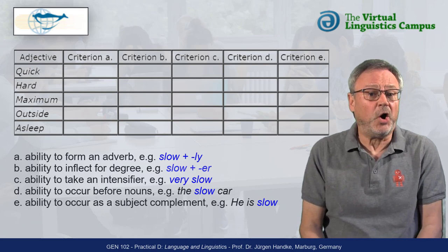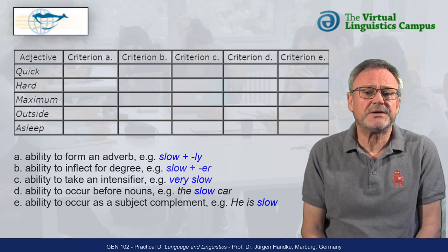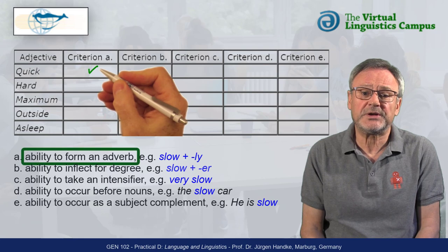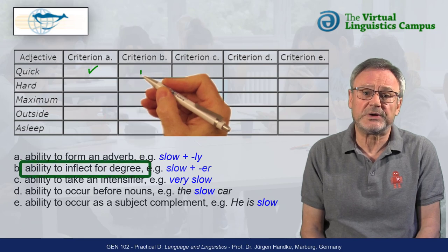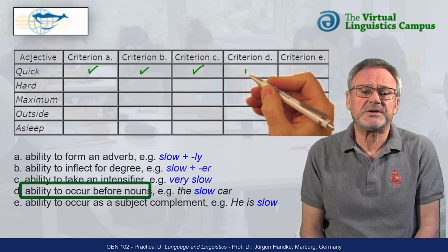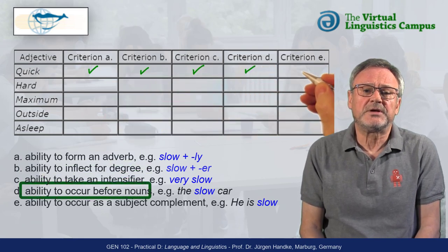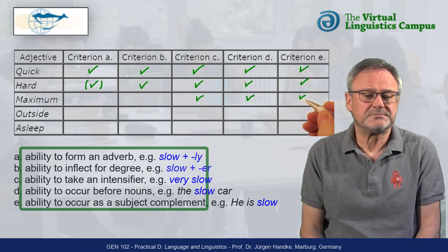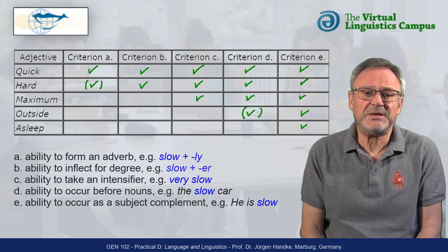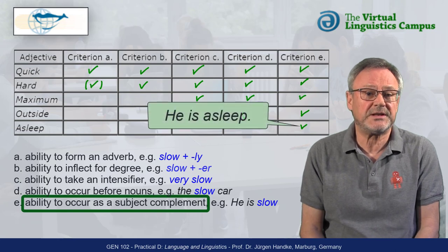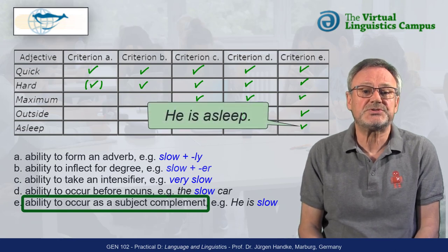As you can see, only 'quick' satisfies all criteria. Quickly, quicker, very quick, the quick answer, and he is quick are all possible. Asleep, by contrast, only satisfies the last criterion: he is asleep.